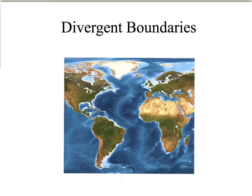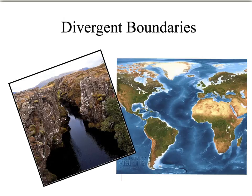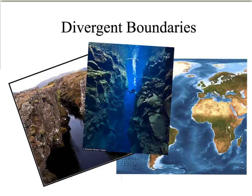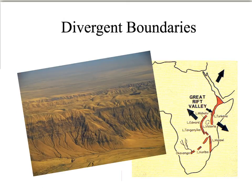An example of a divergent boundary on Earth is the Mid-Atlantic Ridge, where the plates are splitting apart in the Atlantic Ocean. It actually cuts through Iceland, where you can see tall cliffs on either side with water in between. Underwater, a scuba diver can be seen in that Mid-Atlantic Ridge. In Africa, the Great Rift Valley is also an example of plates pulling apart, creating enormous valleys with really steep side walls.